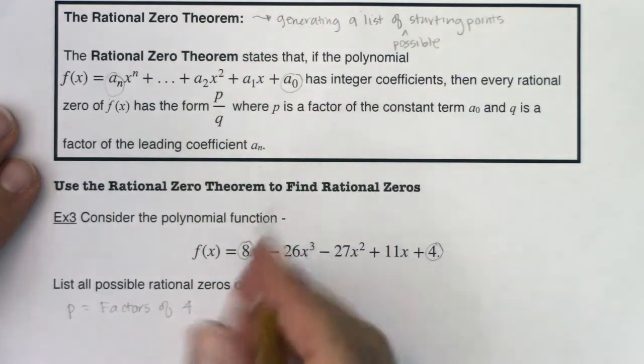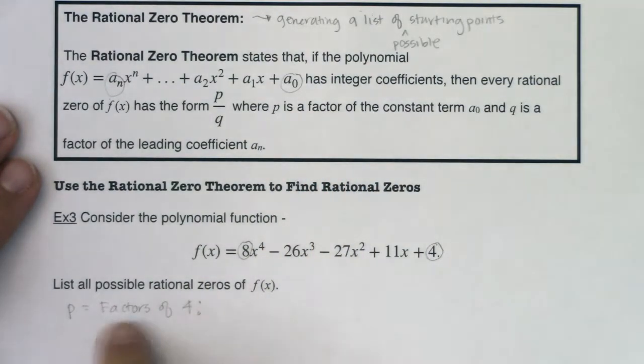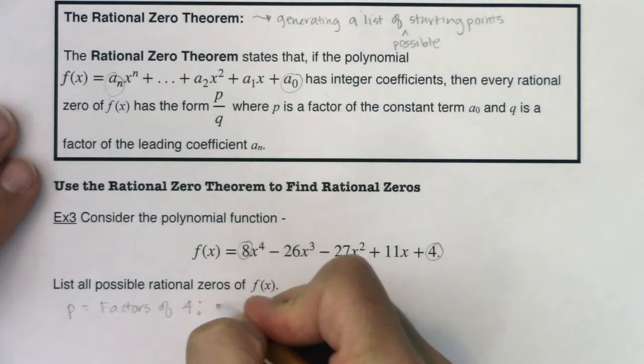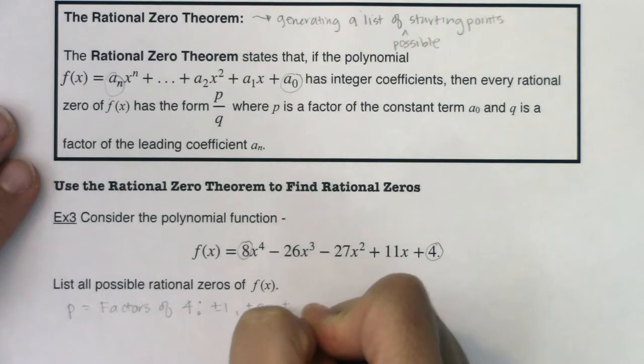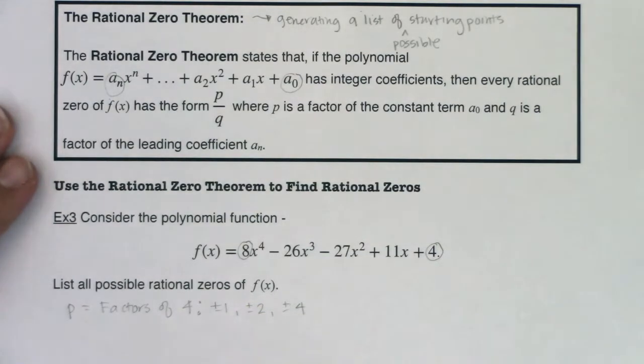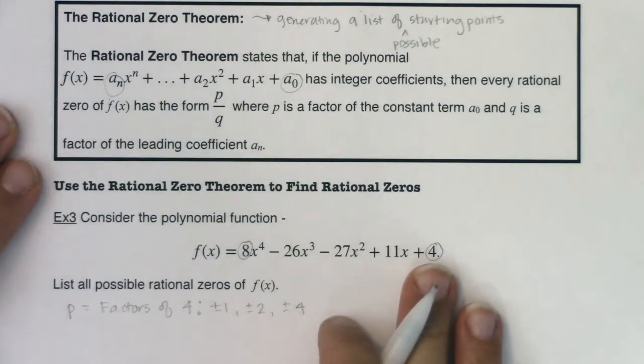So p, we want to look at the factors of your constant, which in this case is 4. So p is a factor of the constant term. So we want you to think about what integers 4 factors into. And plus or minus 1 is a factor of 4, plus or minus 2, and plus or minus 4. Those all divide evenly into this constant term.